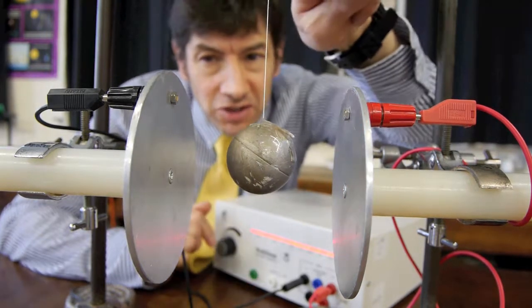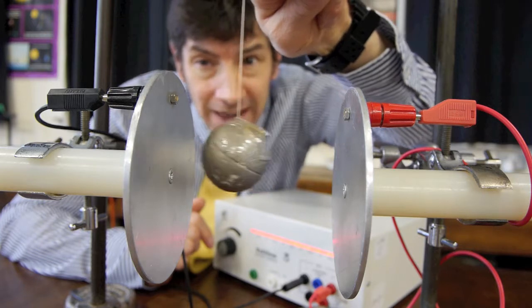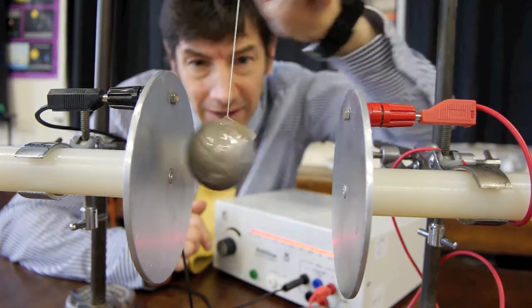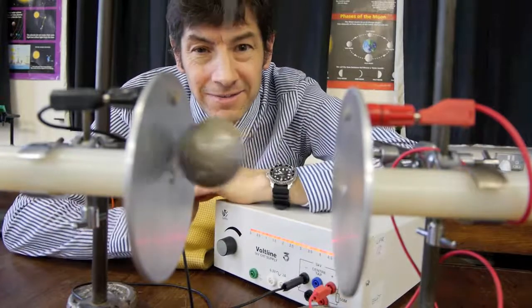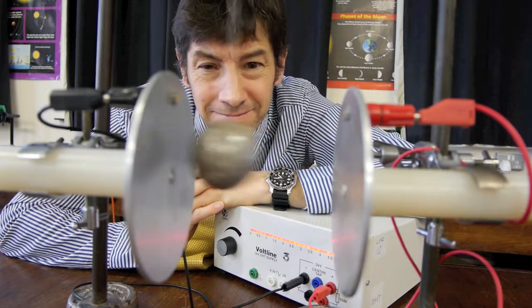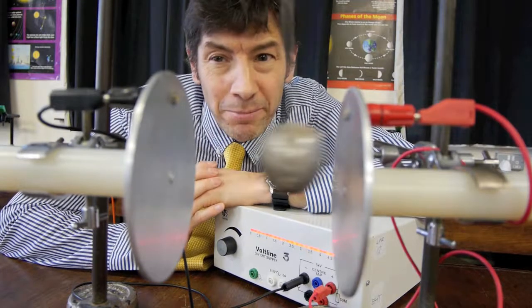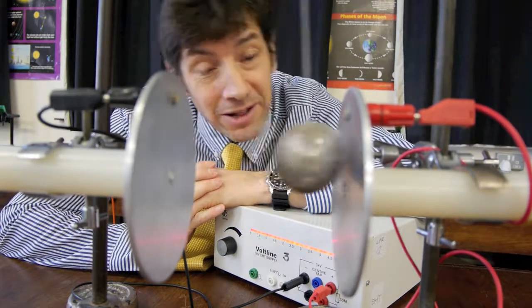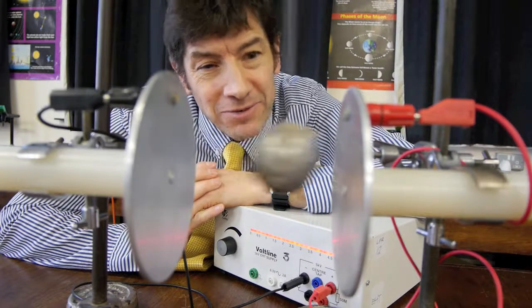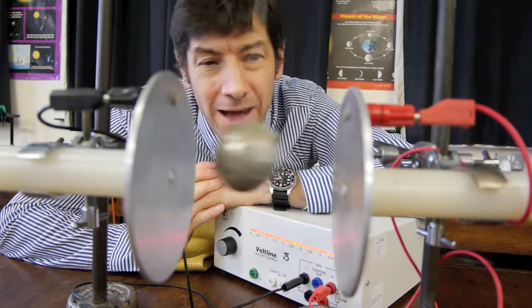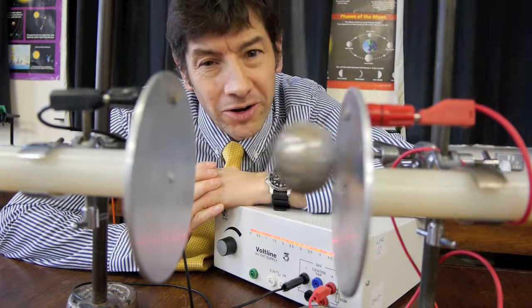But what happens if I touch the ping-pong ball gently onto the negative plate, that's the black one here, and then let go? Well, straight away you can see why I call this one the ping-pong ball clock. But it'll need a bit more explanation for me to explain to you why I call it an electrostatic clock. You might be surprised by what's going on here.